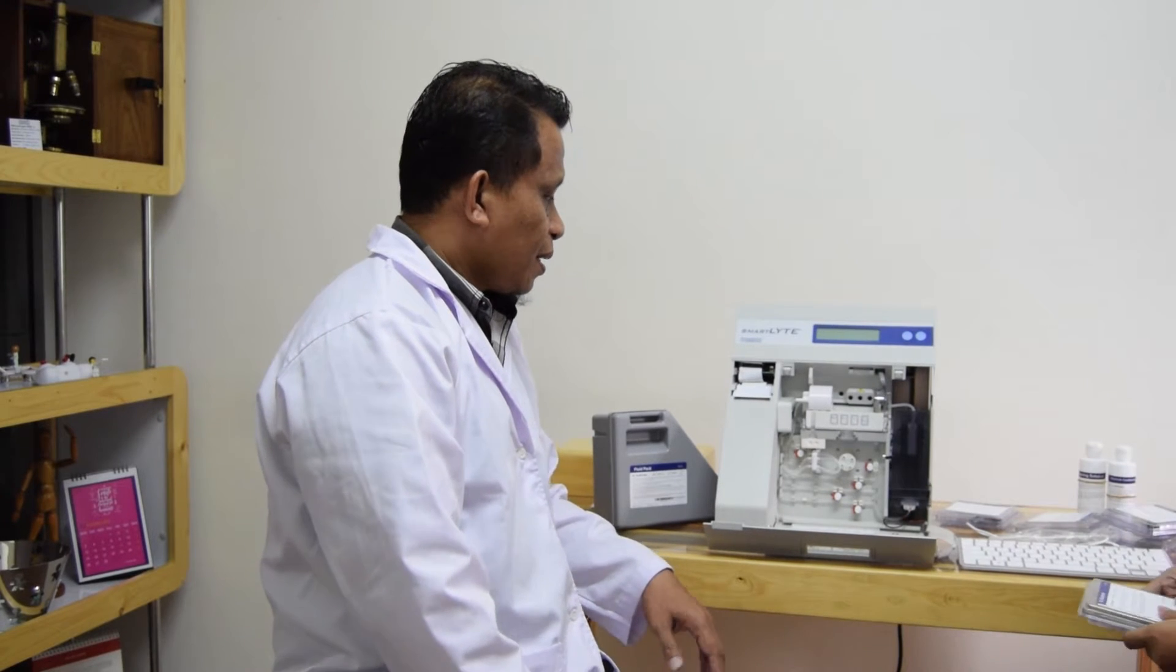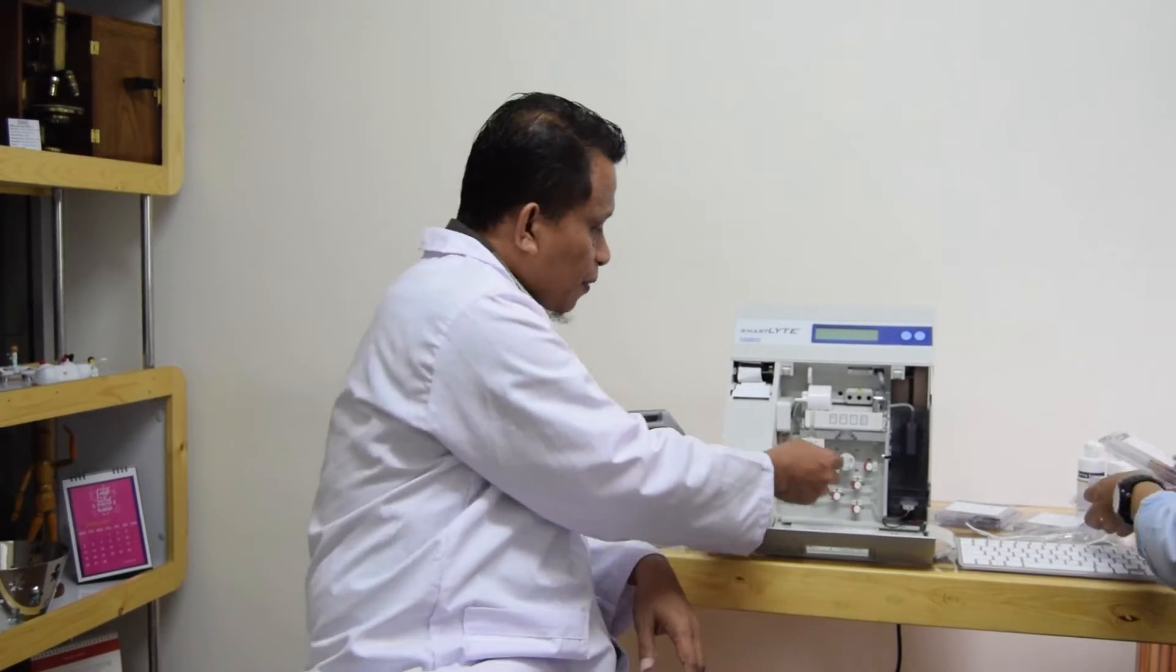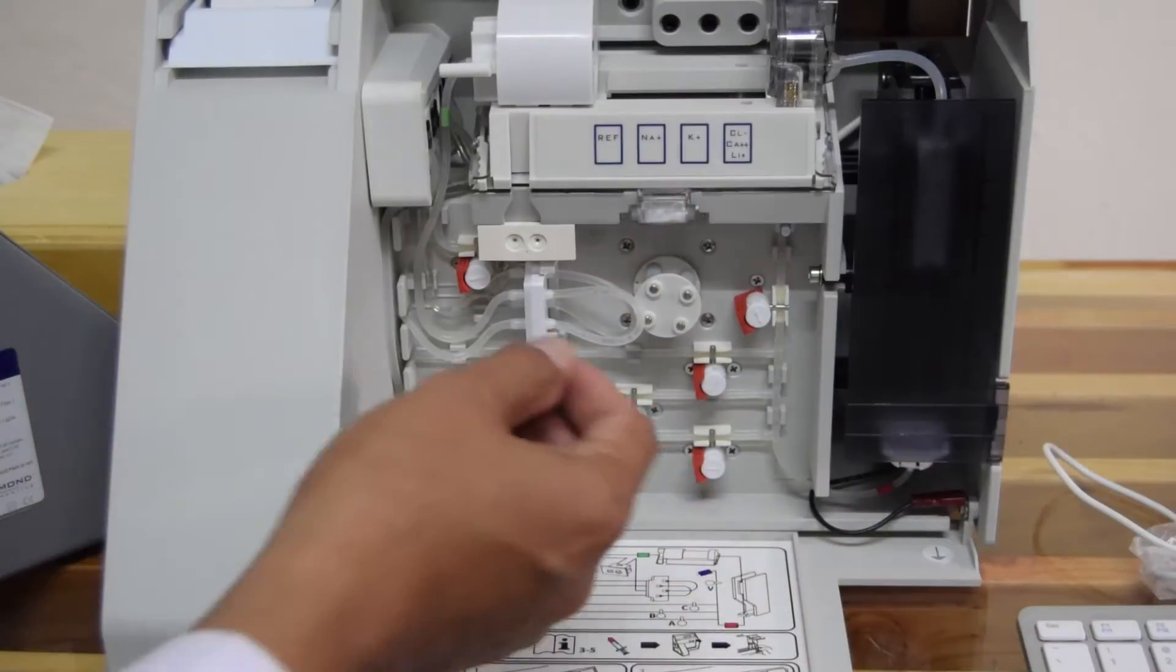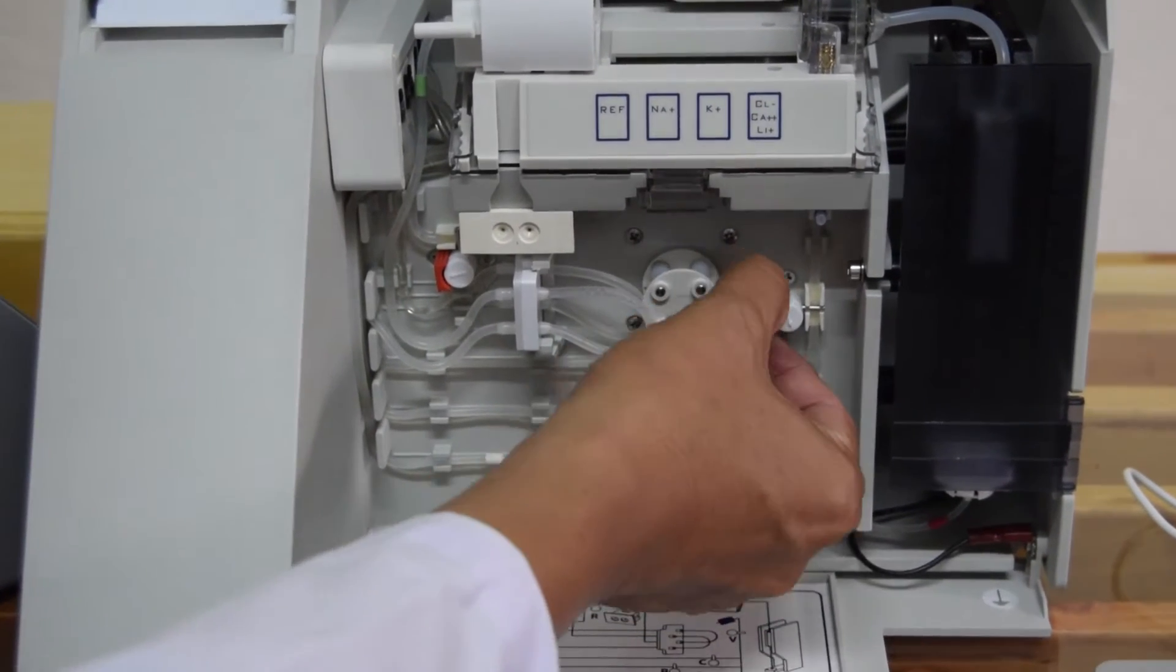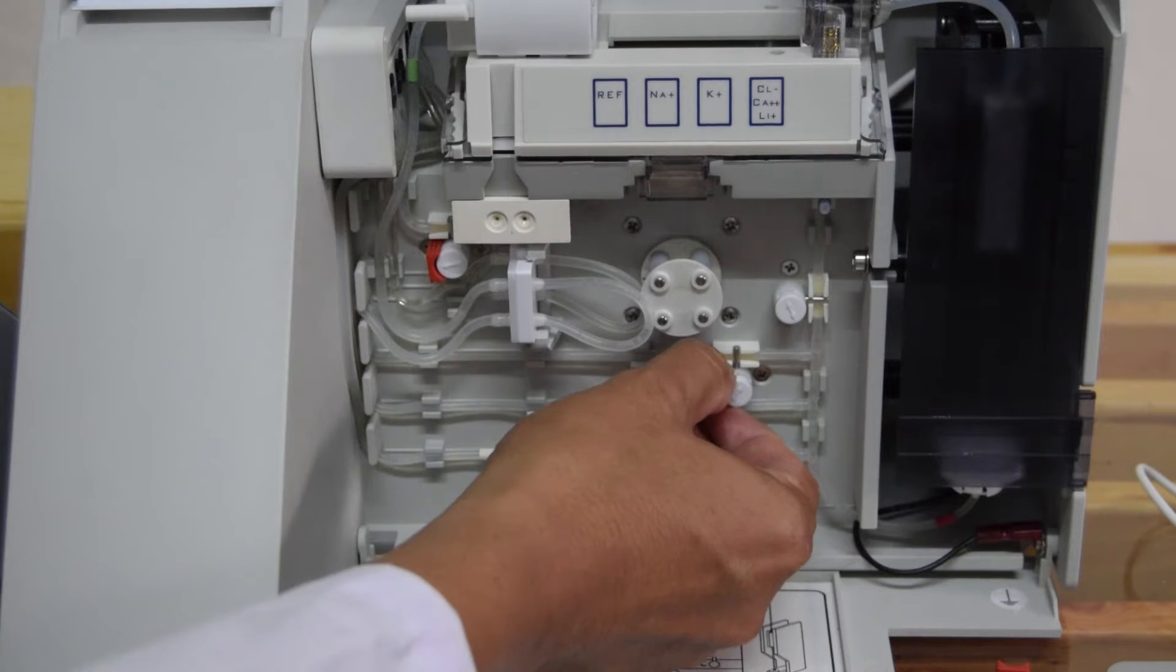Untuk alat SmartLine ini juga, selain dia bisa pro-life, dia bisa juga melakukan pengukuran dengan kalium dan litium. Jadi, ada opsional tambahan elektroda yang juga bisa diukur pada alat ini. Saya akan melepas jepitan dari pinch valve-nya. Kita coba melepas jepitan merah pada pinch valve seperti ini.